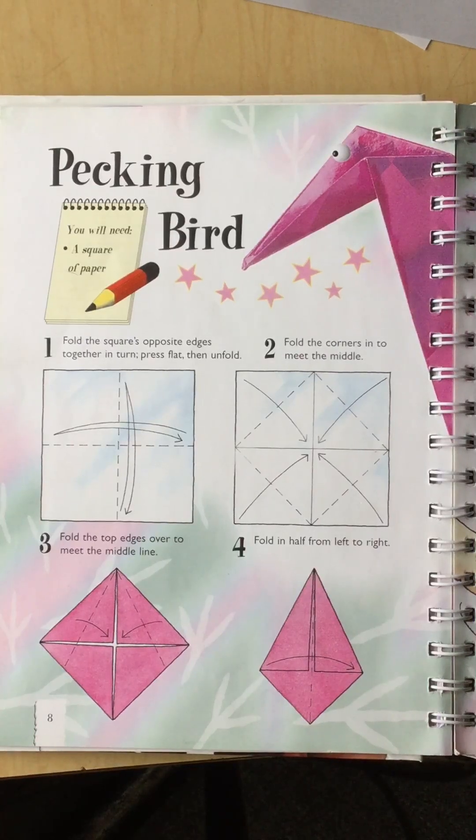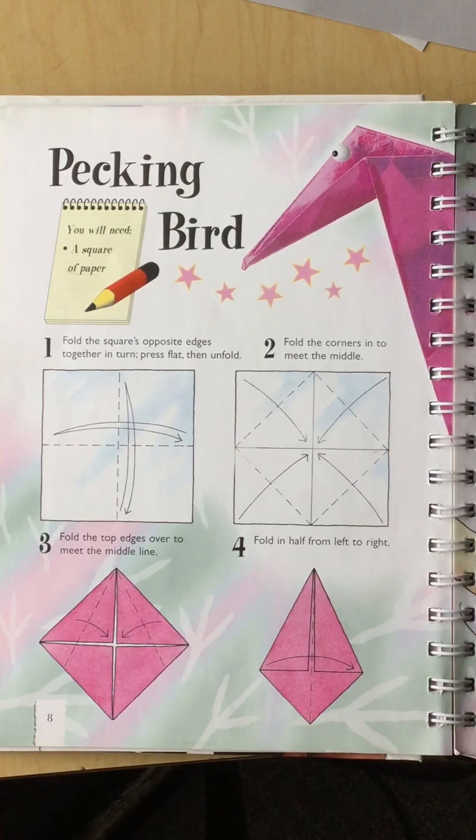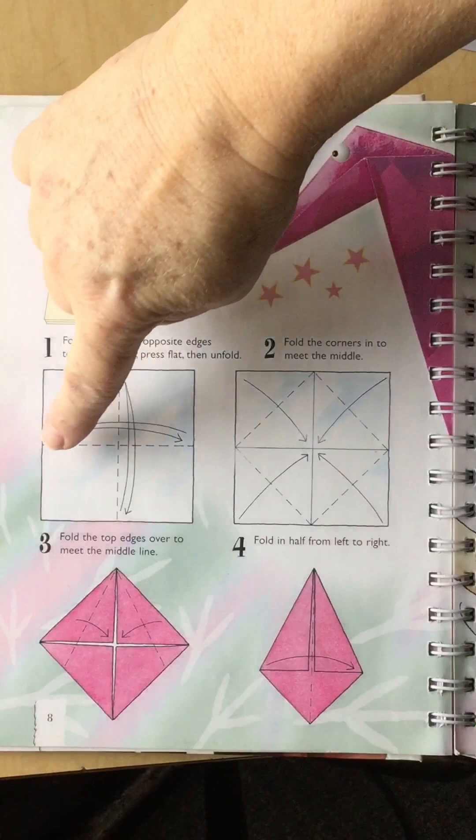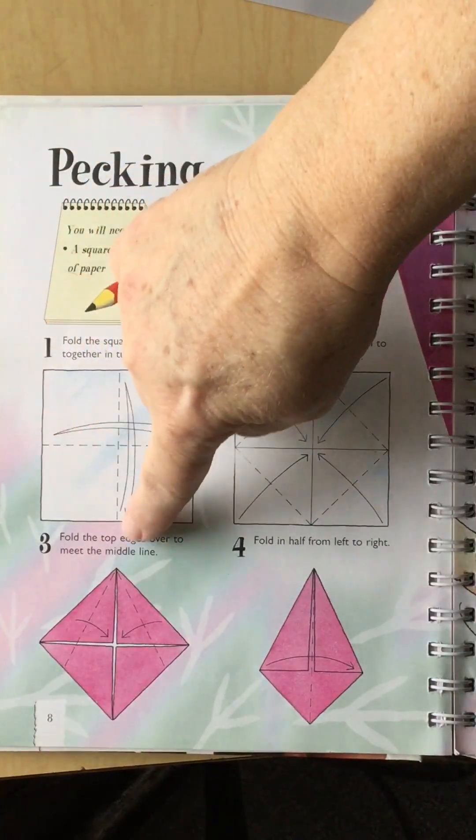Hello! Are you ready to learn how to make a pecking bird with origami folding? What we're going to need is one square of paper and then we're going to learn how to fold it in these different directions. So when we're done you'll see these lines.